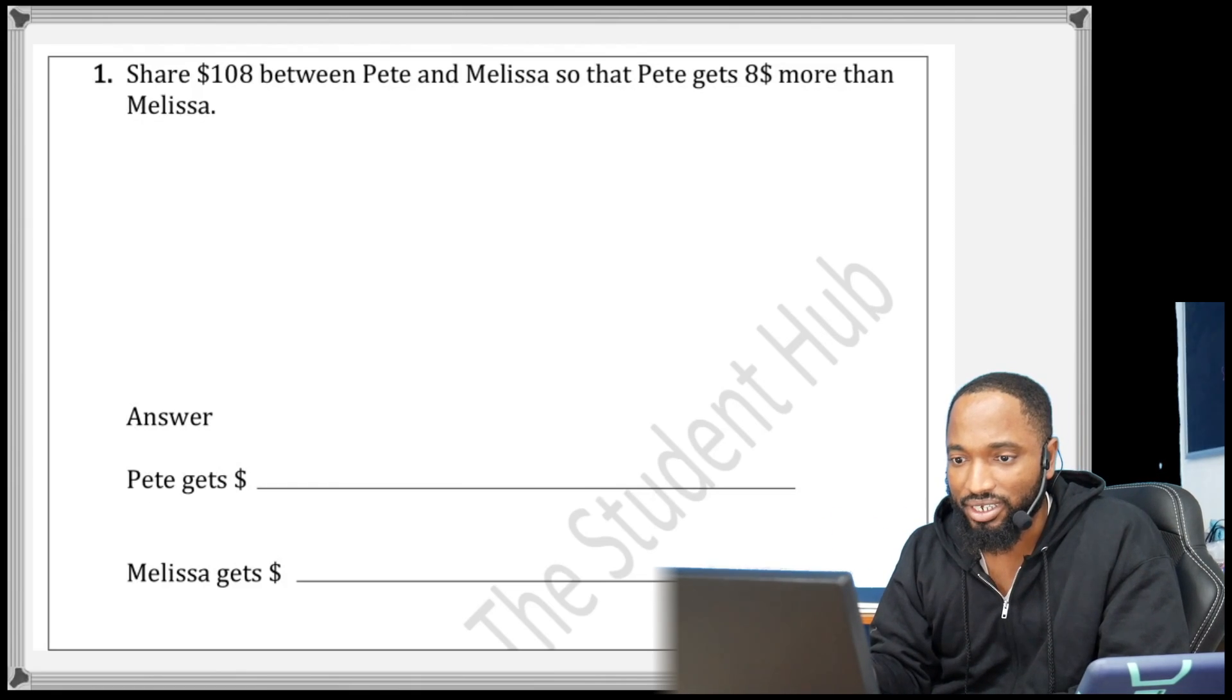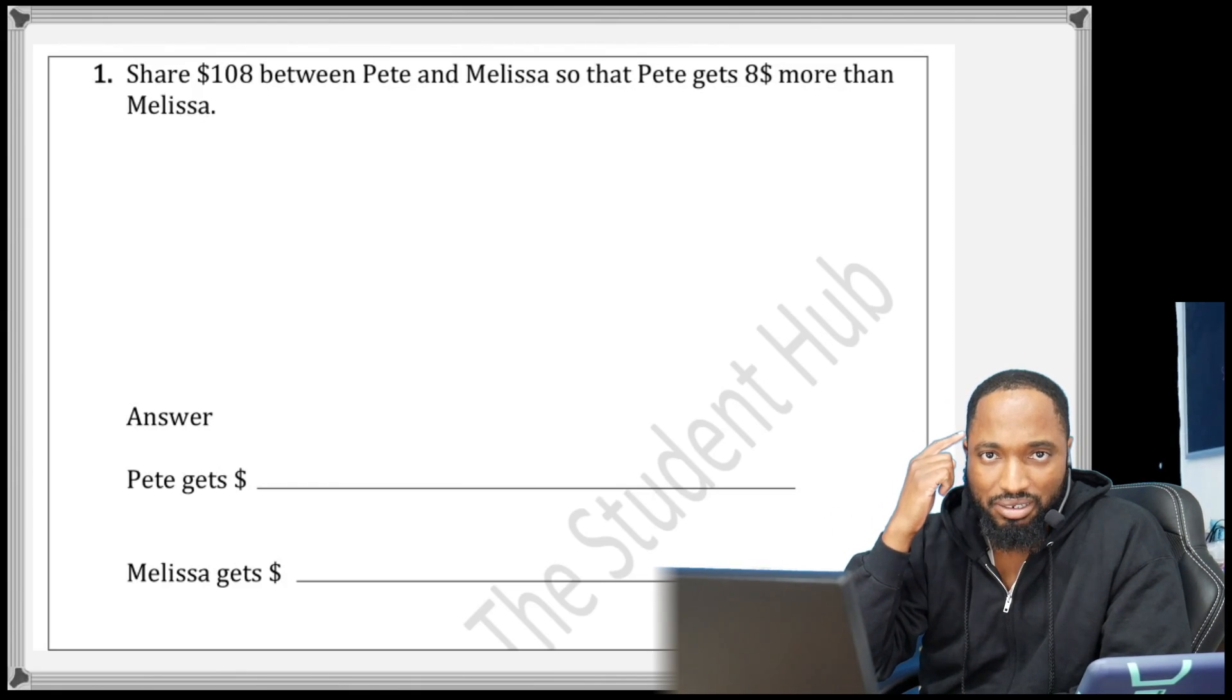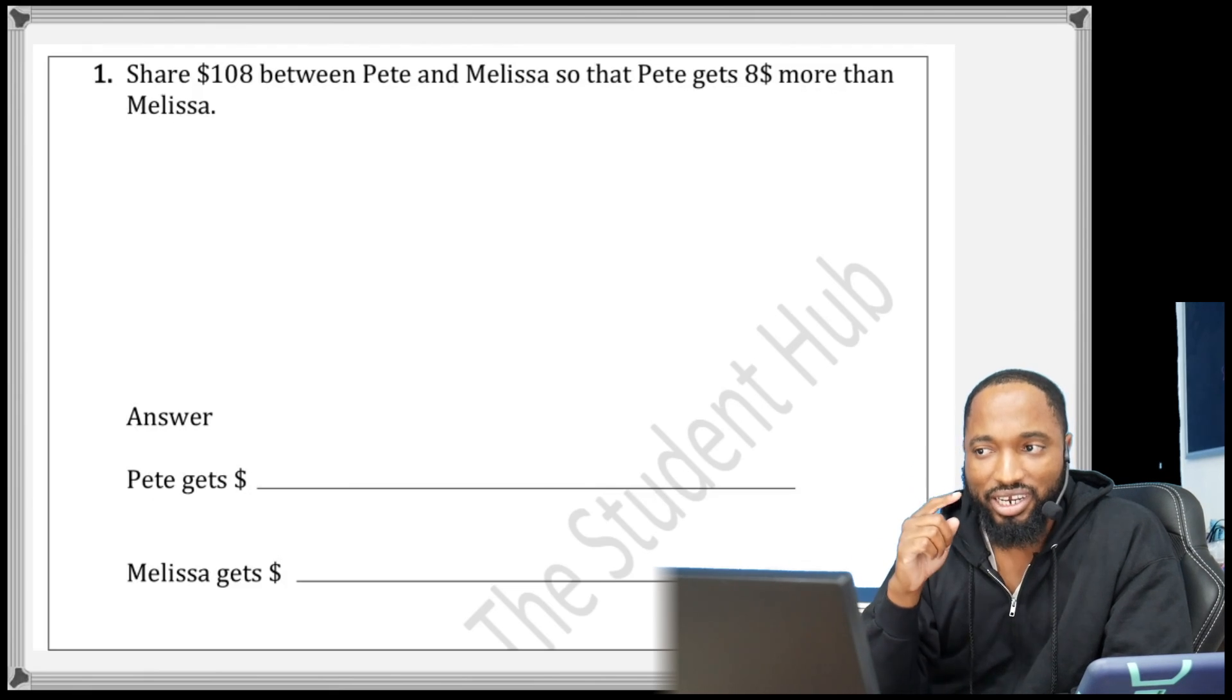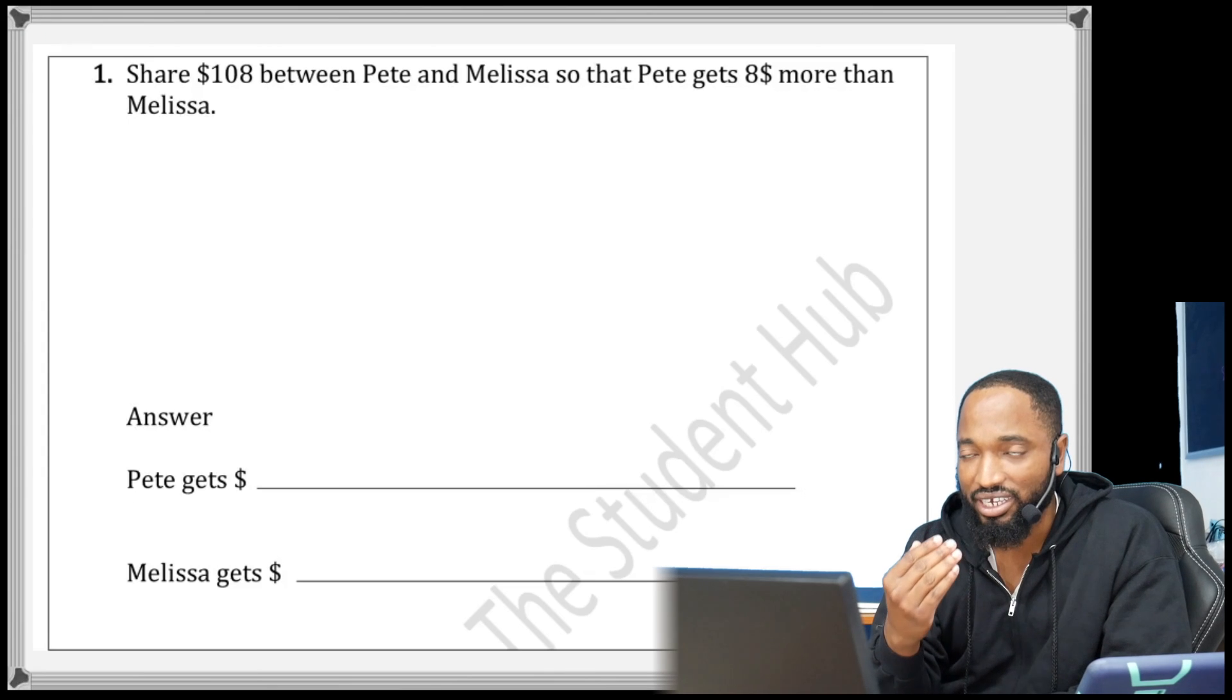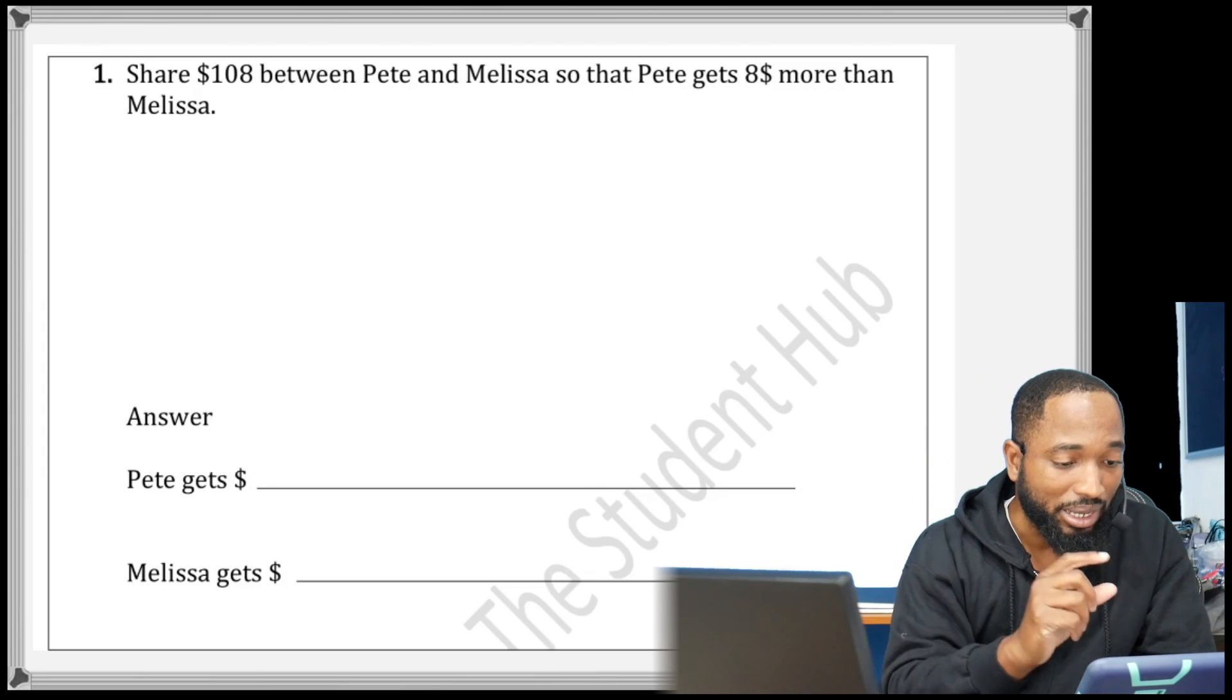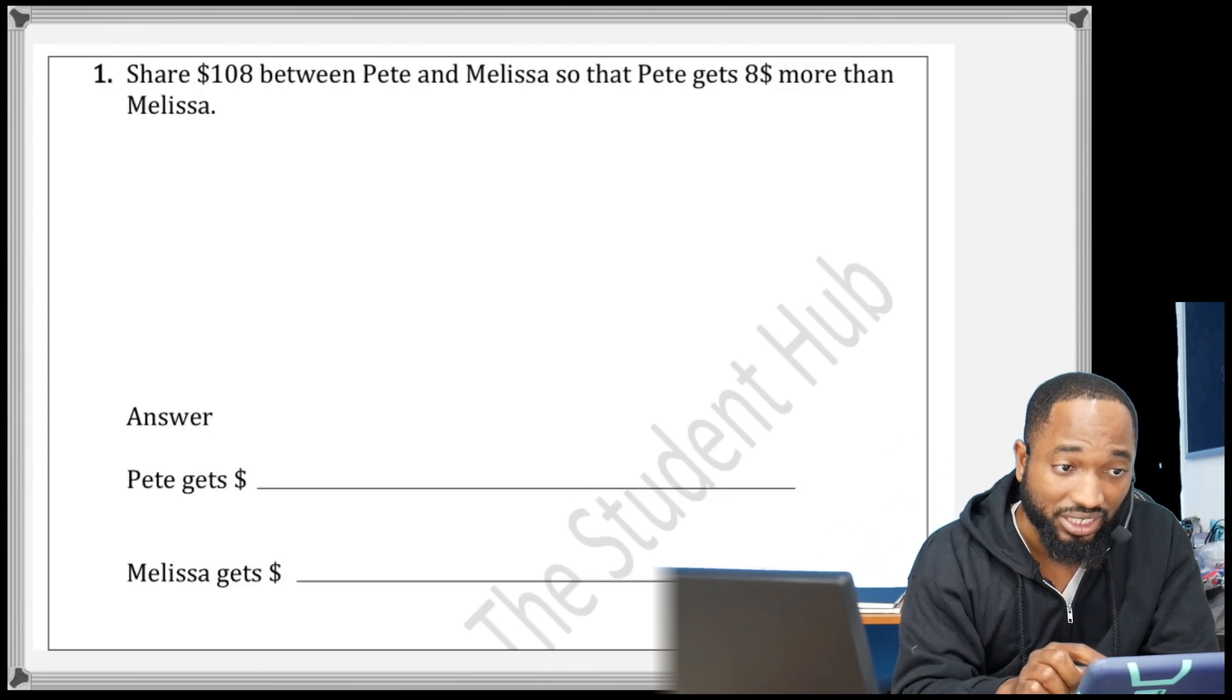A lot of us could probably see that Pete's gonna end up at $58 and Melissa will end up at $50, right? Because he's getting $8 more. $100 take away $8. But you see what you're doing there mentally—that is the exact process for the question even if it becomes a little more difficult.